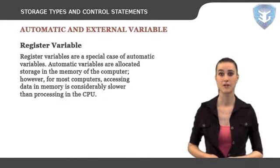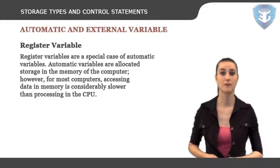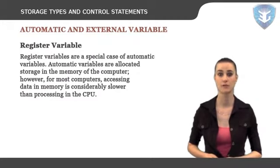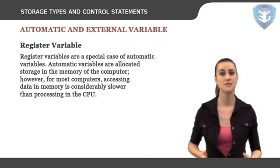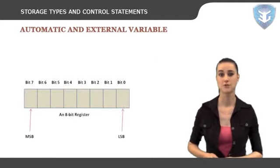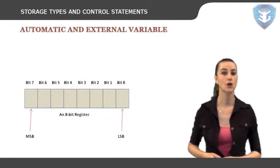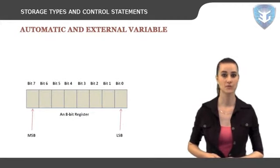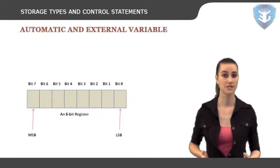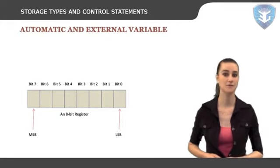Register variables are a special case of automatic variables. Automatic variables are allocated storage in the memory of the computer; however, accessing data in memory is considerably slower than processing in the CPU. Computers often have small amounts of storage within the CPU itself called registers, where data can be stored and accessed quickly. Register variables behave just like automatic variables: they are allocated storage upon entry to a block, and the storage is freed when the block is exited. The scope of register variables is local to the block in which they are declared.